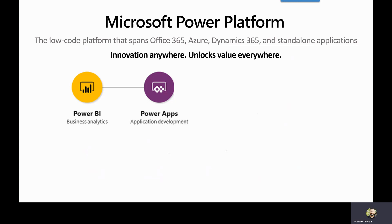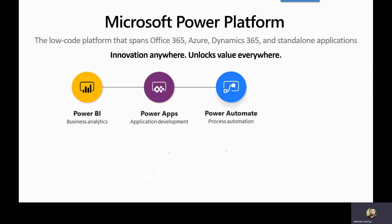You just need to apply your thought process around your day-to-day business scenarios when building applications. The next product is Power Automate, which enables process automation. It is a robotic process automation tool — earlier known as Microsoft Flow. You will be able to automate most of your repetitive tasks that you currently do manually, very easily, and once again you do not need to be a hardcore professional developer to use this tool.